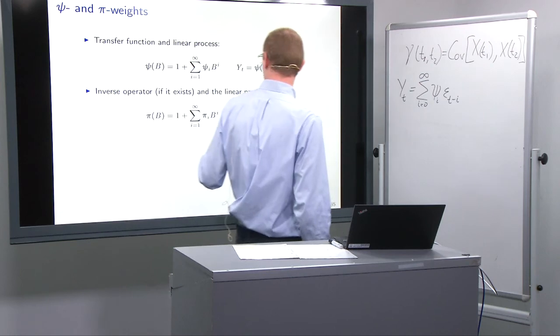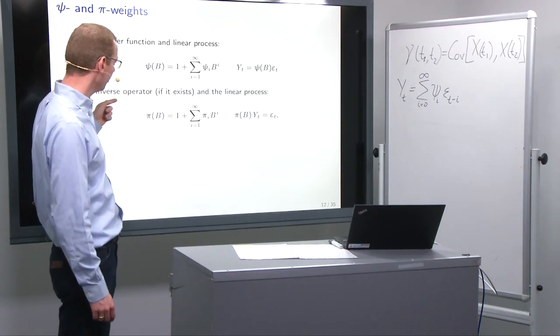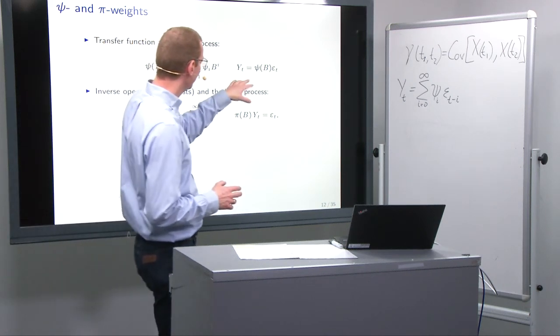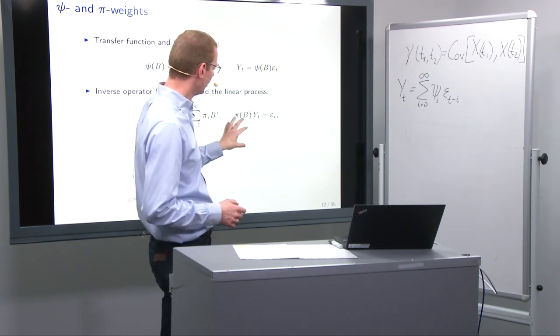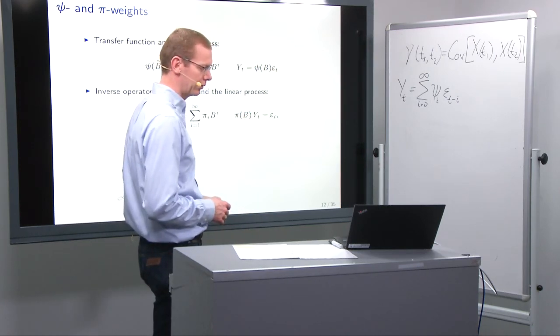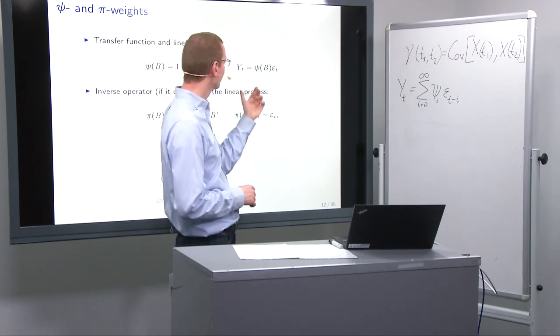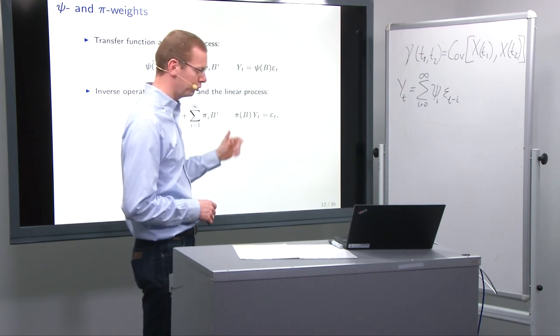So that's the first part. We can also define the inverse operator if it exists, so that rather than having the infinite polynomial operator applied on epsilon, we can apply it on y_t. So you have both formulations: a forward time with a ψ polynomial and an inverse polynomial with π.